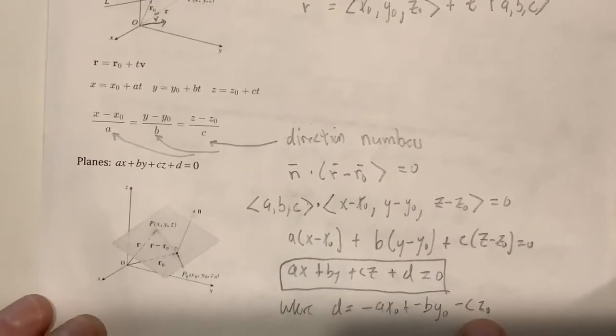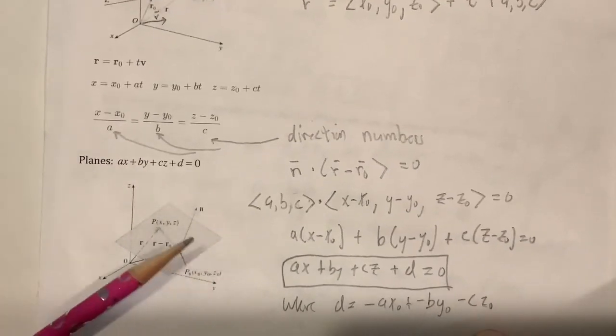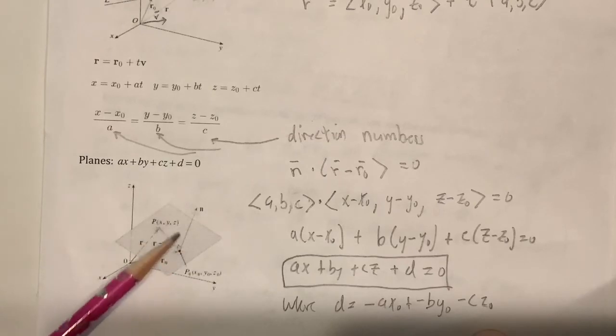For planes now, to define a plane, you need a point, x naught, y naught, z naught, and a normal vector.